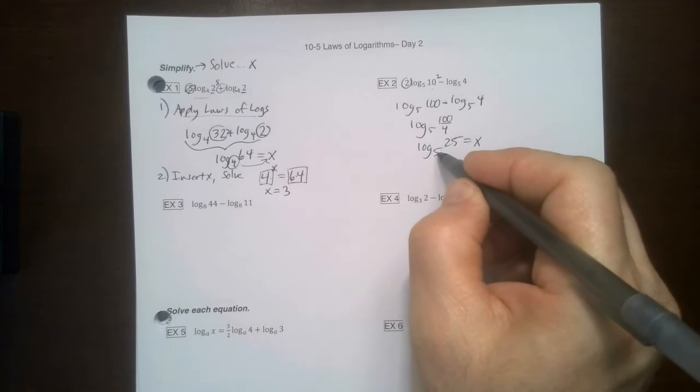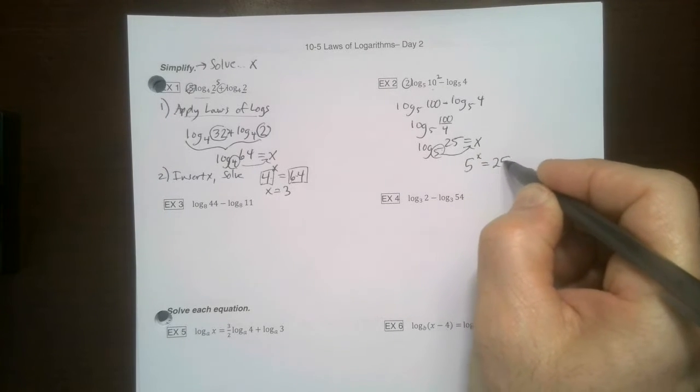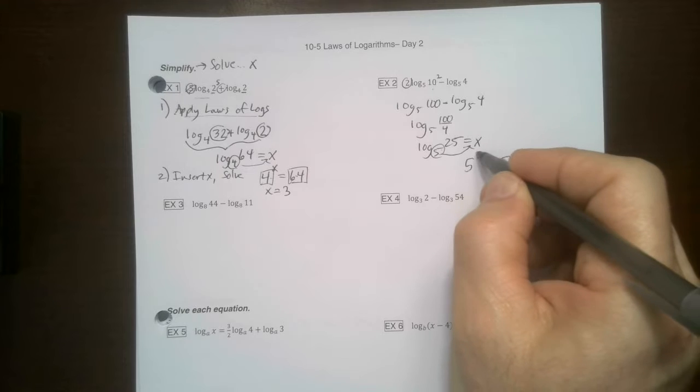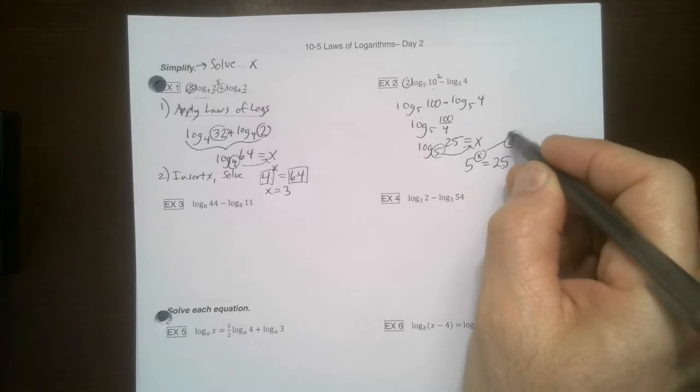Now that we've turned it into one log and it looks simple, we put our X in there. Start here, go here. 5 to the X power equals 25. And you can just look at it and go, ah, that has to be 2. 5 squared is 25. So my answer is 2.